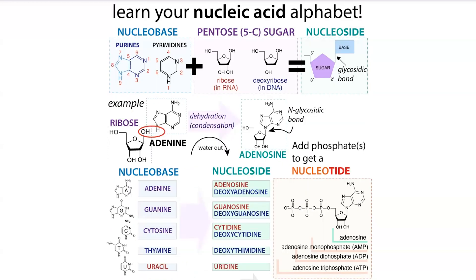When we refer to nucleotides, we talk about them as nucleoside monophosphate if they have one phosphate group, a nucleoside diphosphate if they have two, or a nucleoside triphosphate if they have three. It's important to say nucleoside something-phosphate, because saying nucleotide triphosphate would be redundant and repetitive — the nucleotide already encompasses having phosphates. If you want to specify how many phosphates, you're describing how many are on the nucleoside.